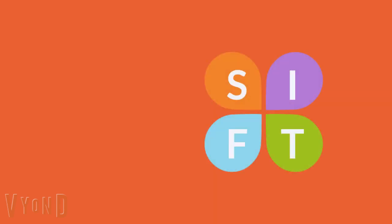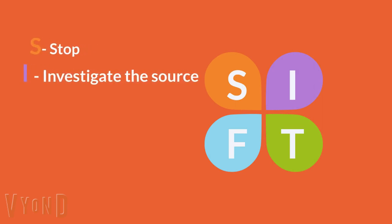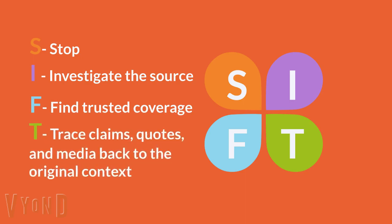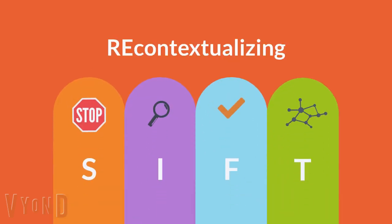Now let's go over SIFT. S for stop. I for investigate the source. F for find trusted coverage. And T for trace claims, quotes, and media back to the original context. All of these moves are about reading laterally and getting the necessary context to read, view, or listen effectively.